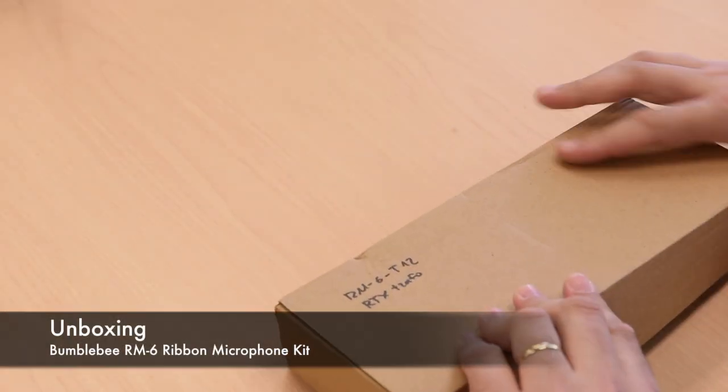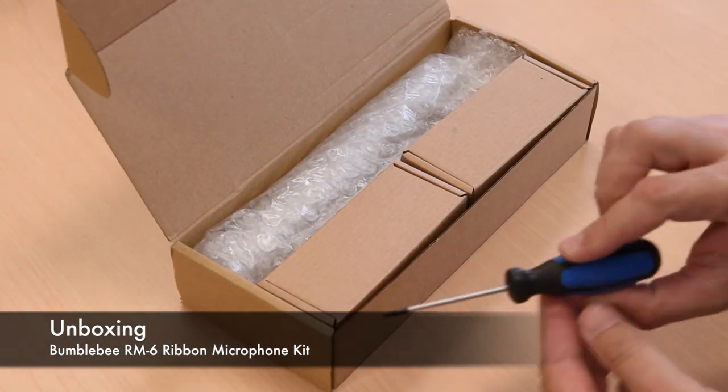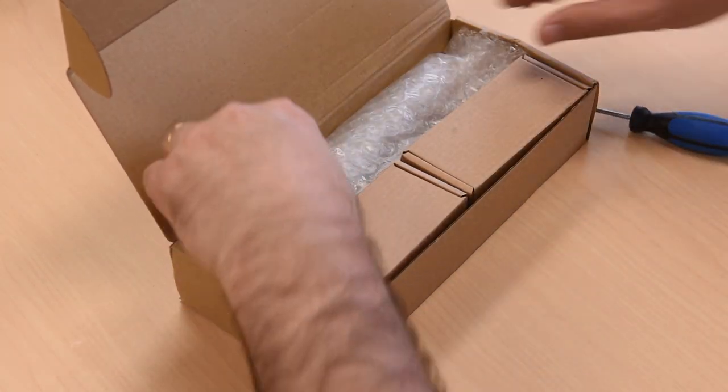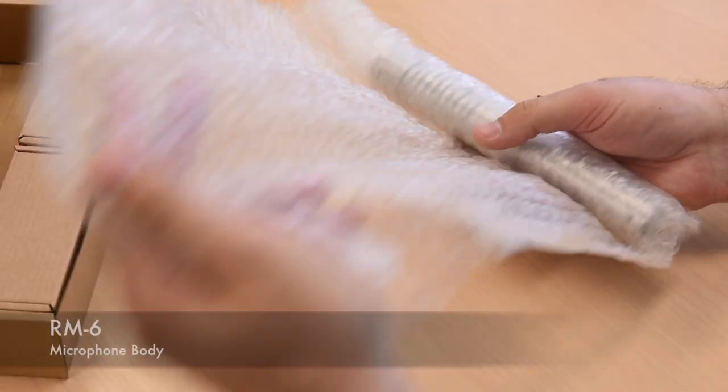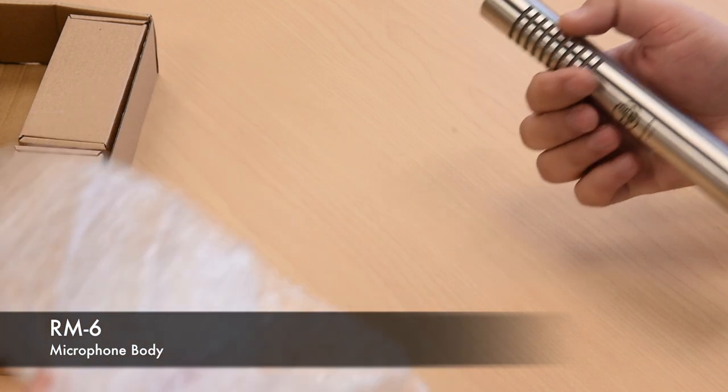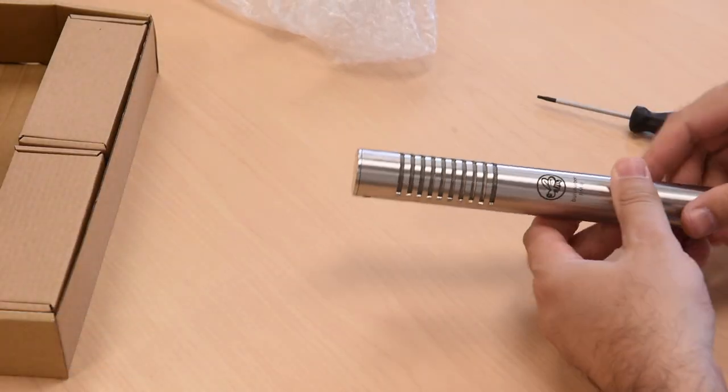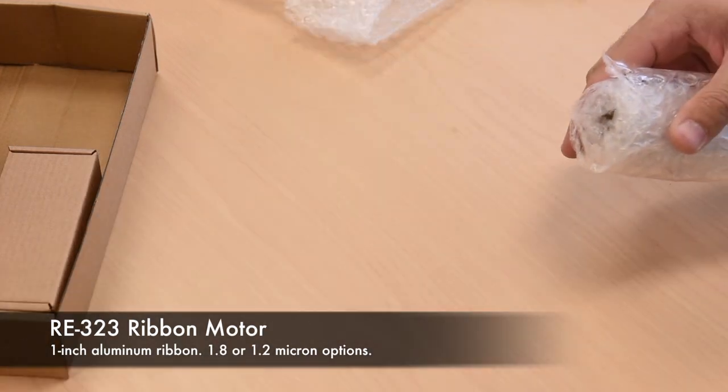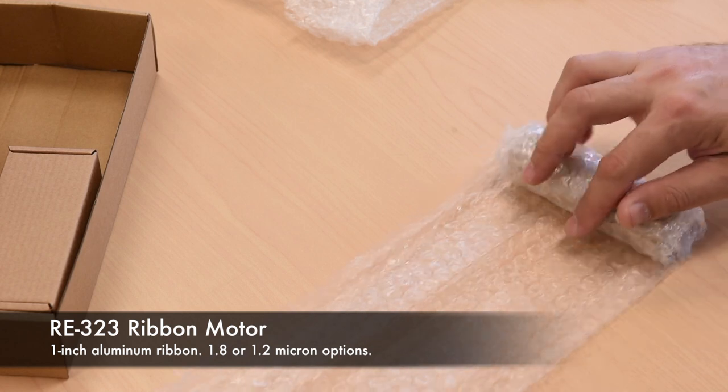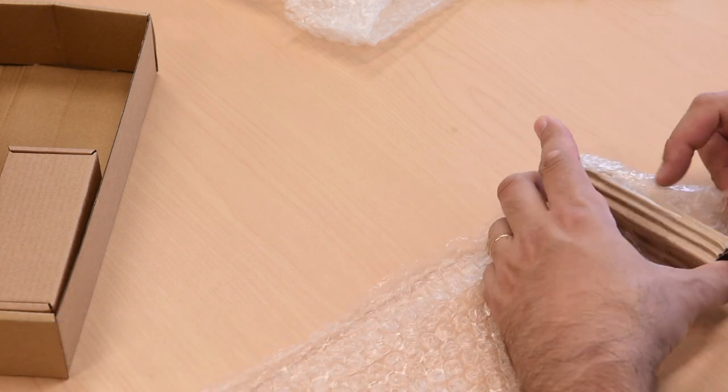This ribbon mic kit includes the optional star wrench, which is used on all of the microphone body cap screws. Inside the box, you'll find the microphone body with its grill already installed. Next is the RE323 ribbon motor. It's a short 1-inch corrugated ribbon design, and Bumblebee gives you the option of either 1.8 or 1.2 micron ribbon thickness.